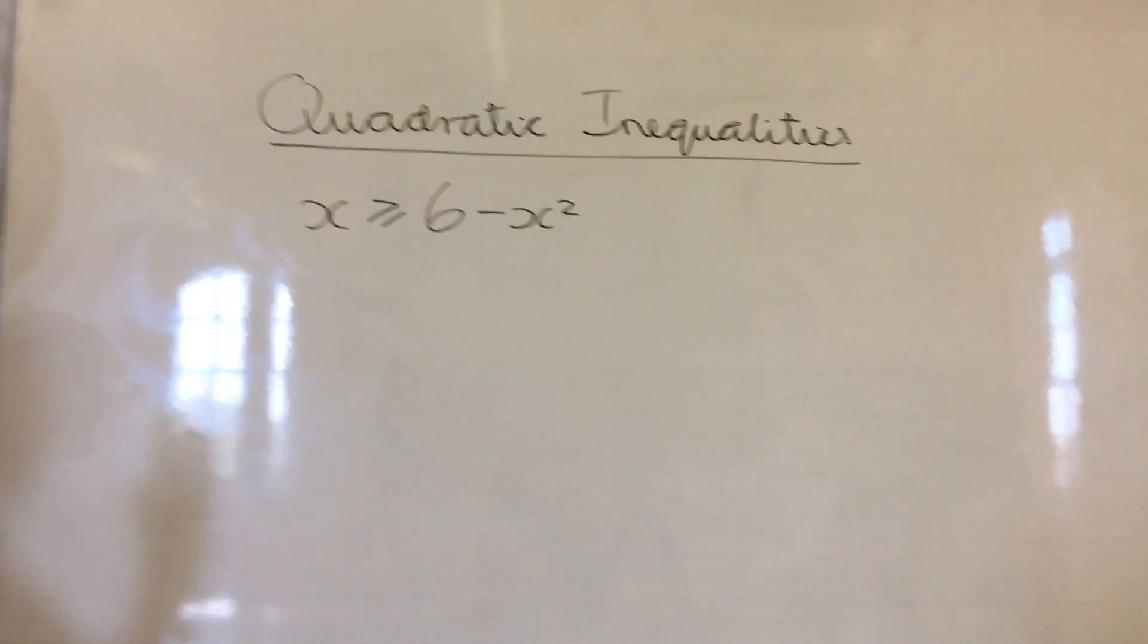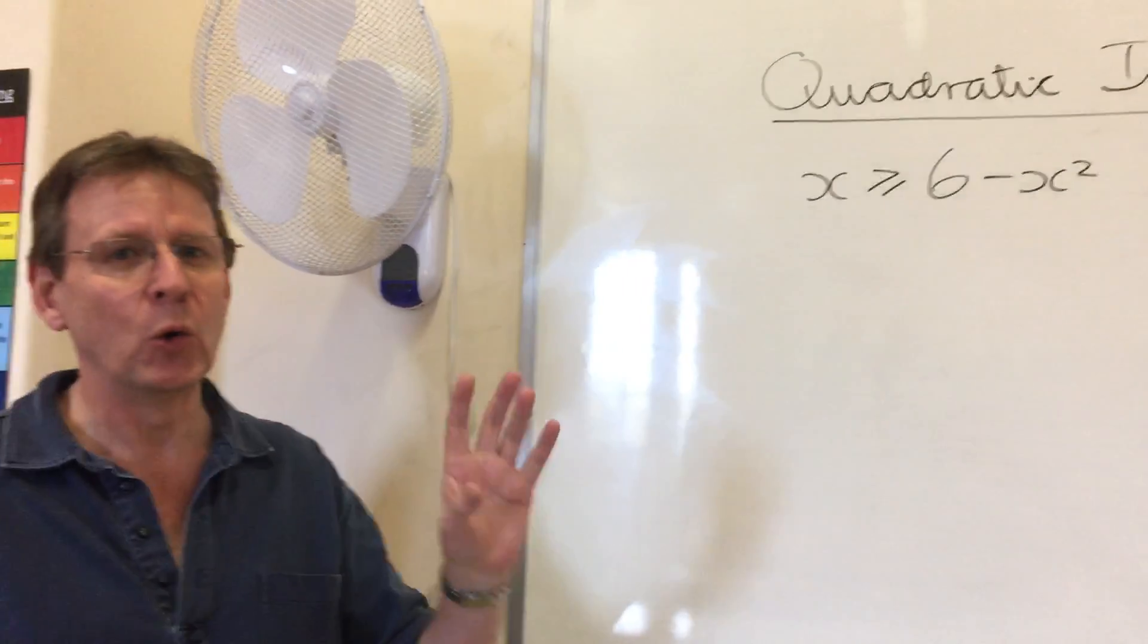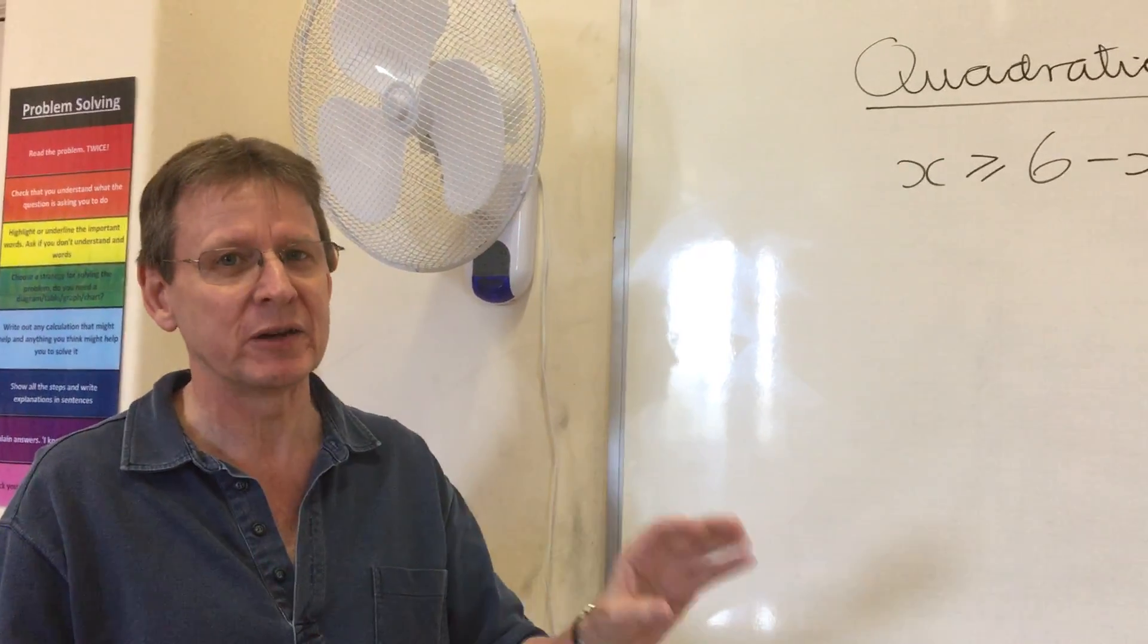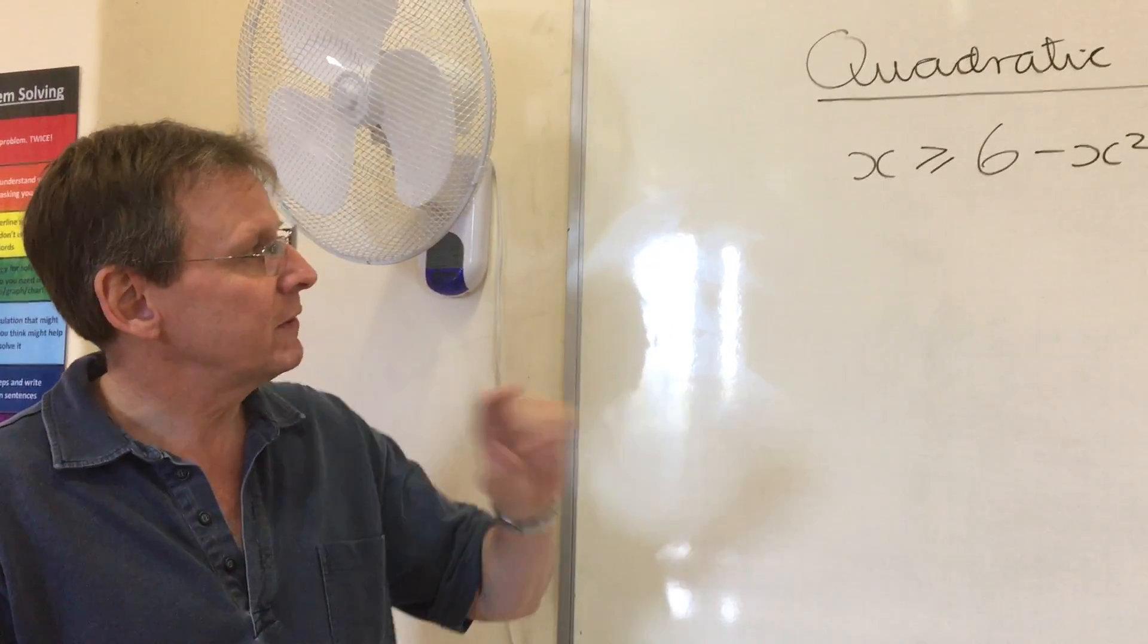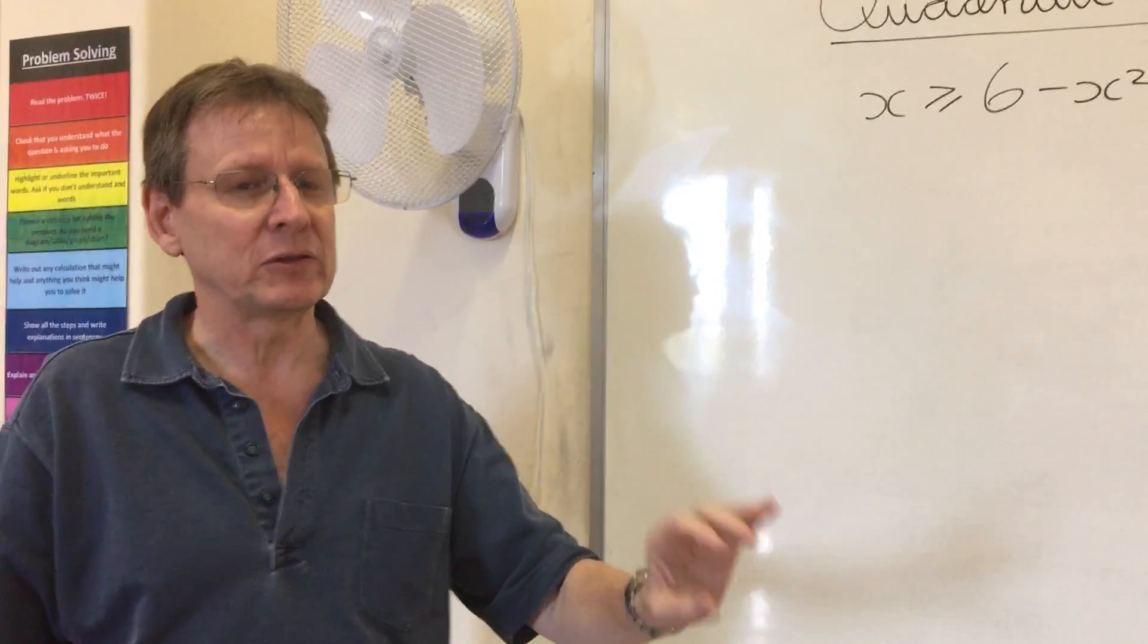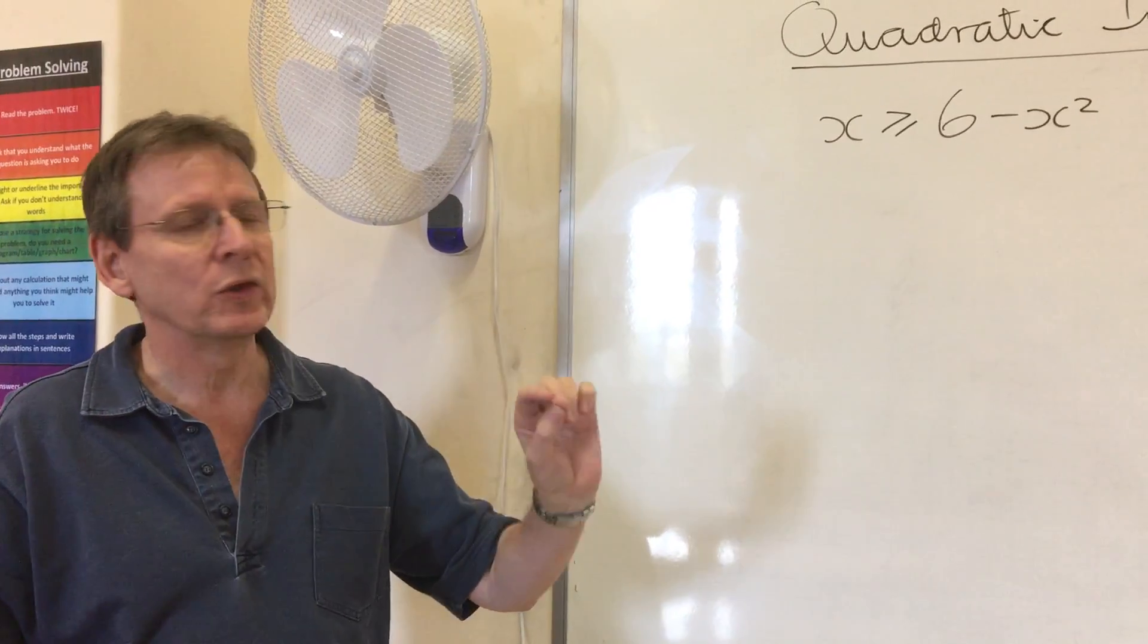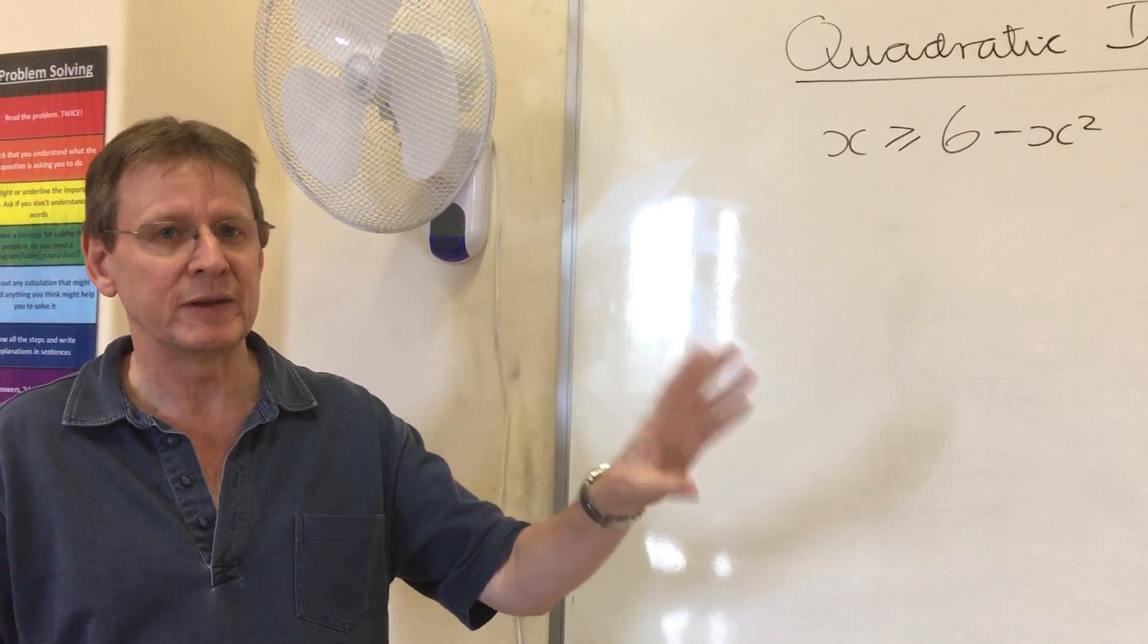First thing, any quadratic equation or inequality, you need all the terms on one side with zero on the other. We want to move everything onto the same side and ideally, but you don't have to do this, but I strongly recommend it, you want the x squared term to have a positive coefficient, a positive number of x squareds.